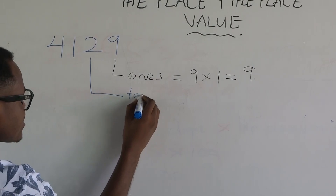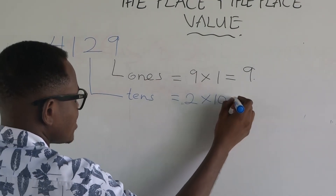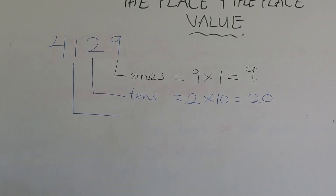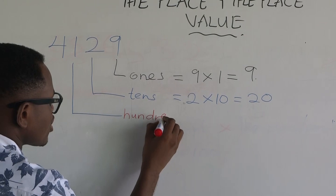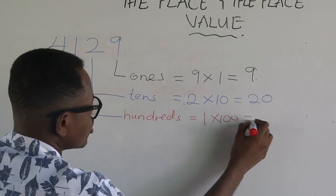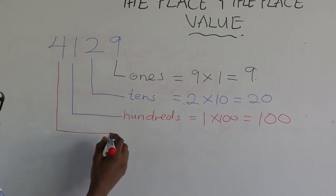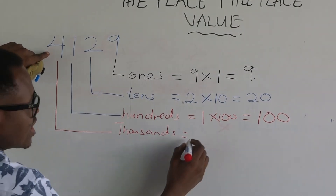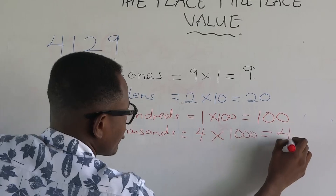What is the place of 2? Tens. So the place value of 2 is two times ten — twenty. What is the place of 1? Hundreds. One times one hundred gives you one hundred. What is the place of 4? Thousands. Four times one thousand gives you four thousand.